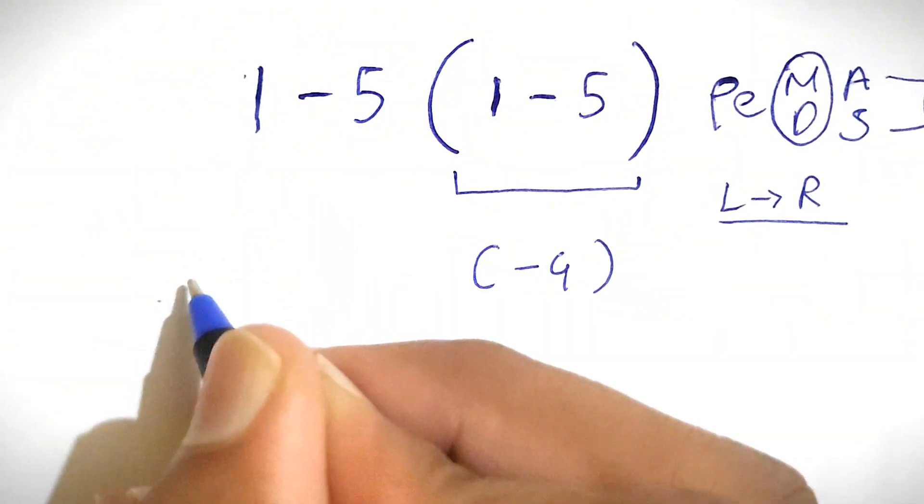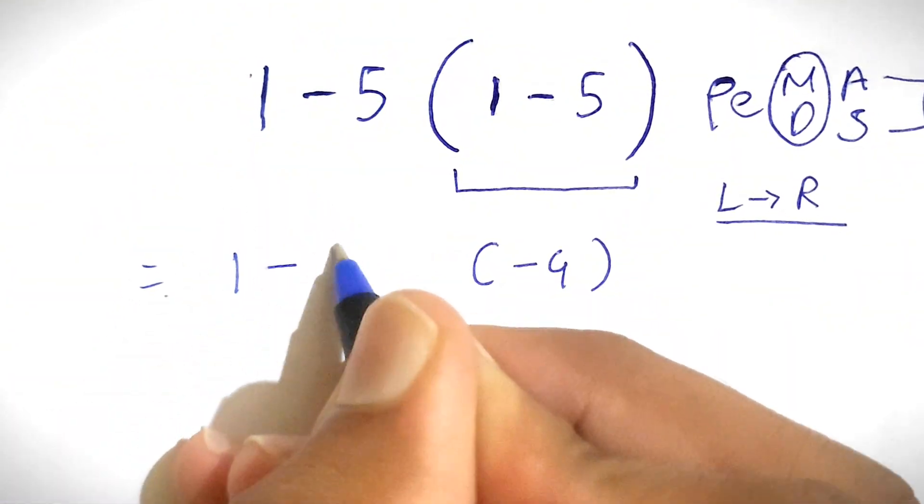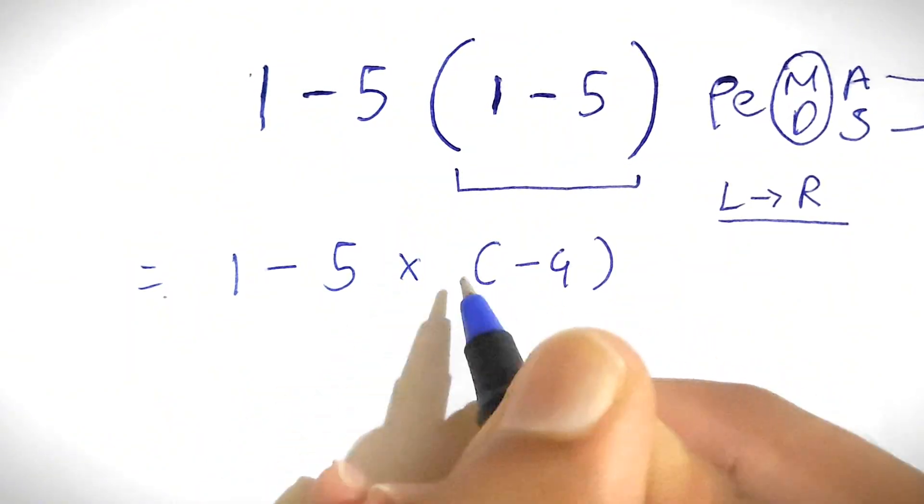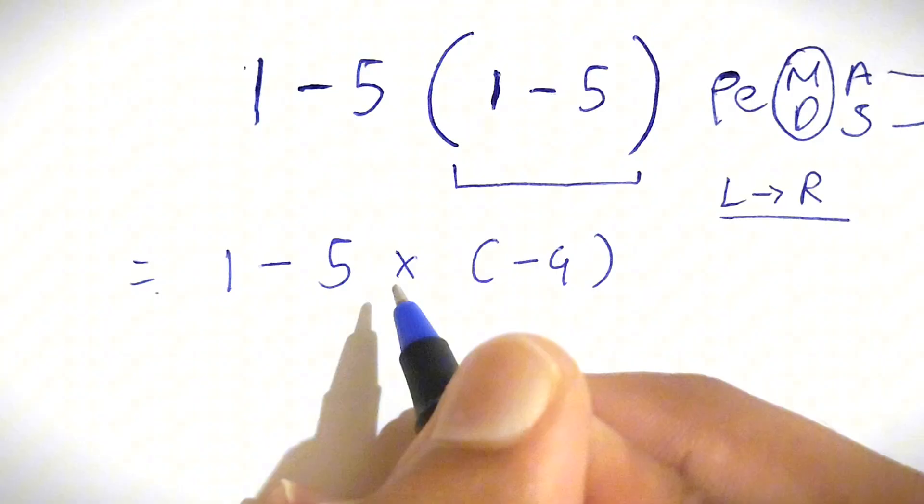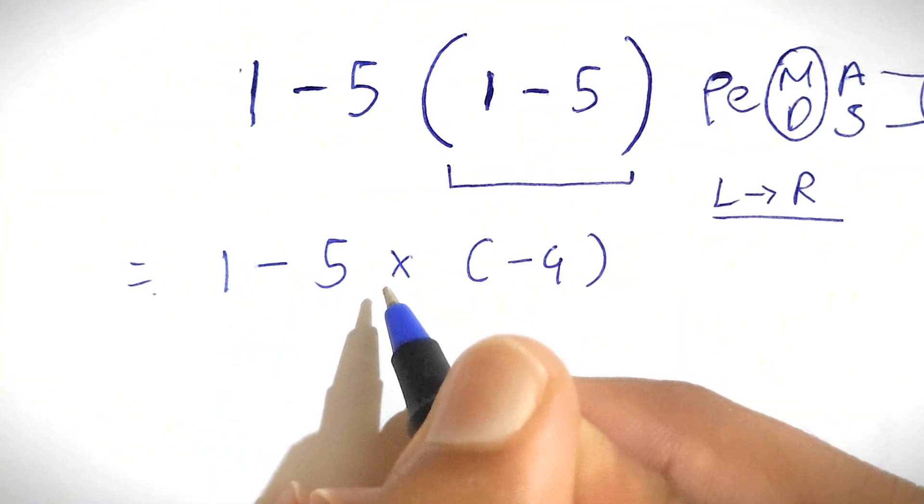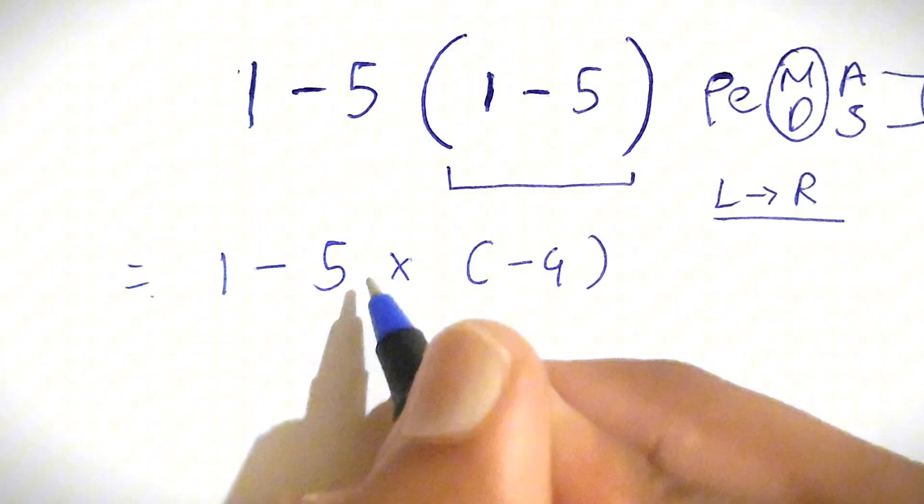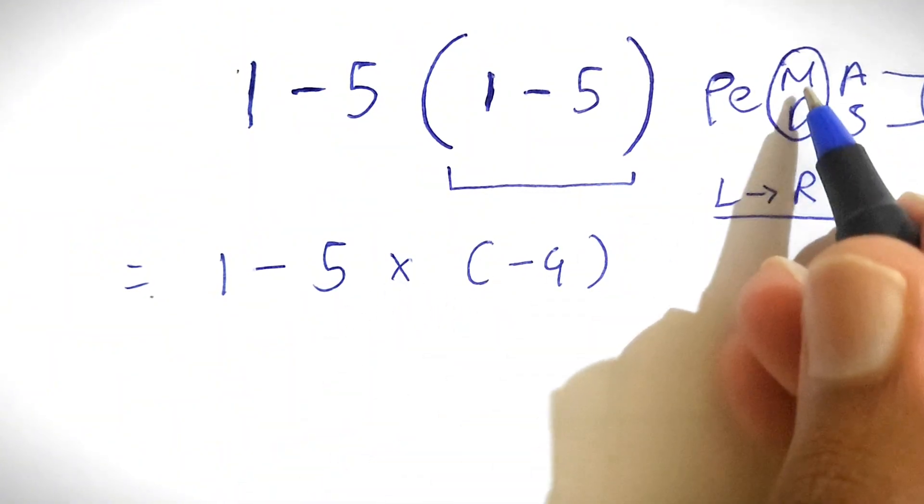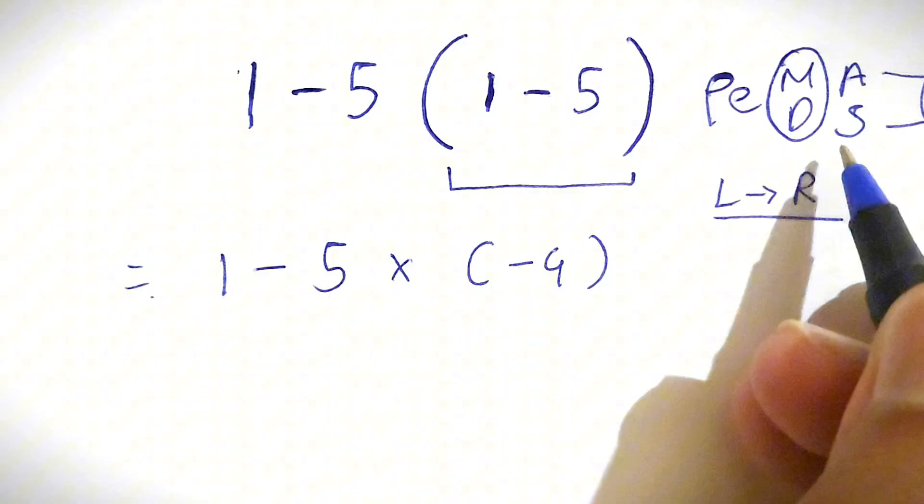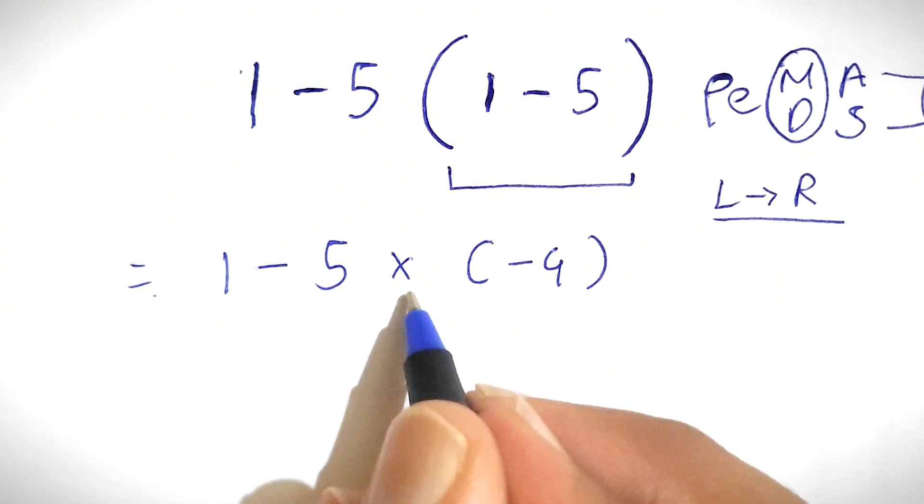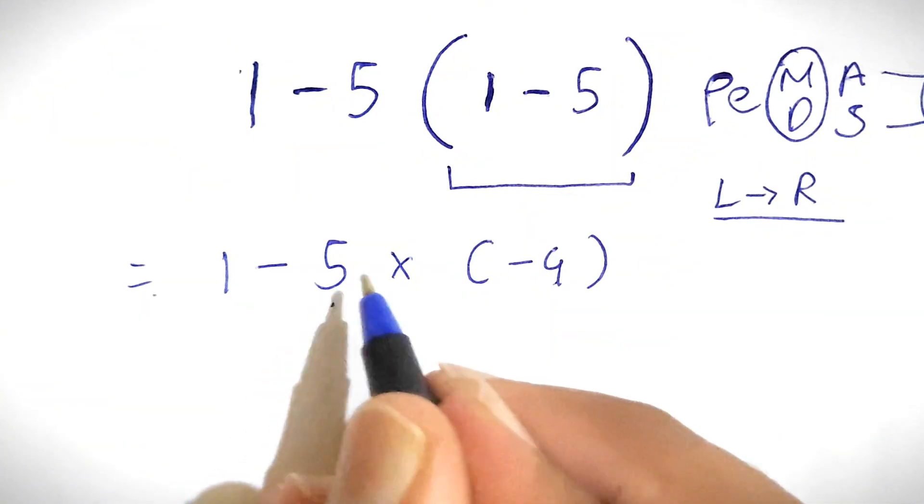As we can see, we have subtraction and multiplication. In this case we need to solve the multiplication first because the priority of multiplication is greater than subtraction. So we'll solve 5 times negative 4, which gives us negative 20.